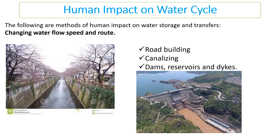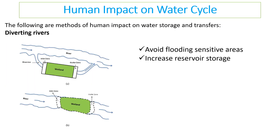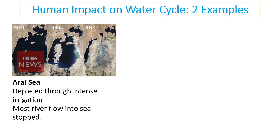You can see the GERD dam here, which has massively slowed the flow of water in that area. We can also divert rivers, which could be positive or negative — to create a new habitat like a wetland, or to create a reservoir. Generally the human impact on the water cycle is not good.